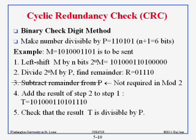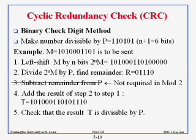CRC is mod-2 division. We select a divisor number — for example, 1110101, which is six bits — and dividing by a six-bit number gives five bits of remainder, which is your CRC. To get a 5-bit CRC you need a 6-bit number. To get a 32-bit CRC you need a 33-bit number, and Ethernet uses a 33-bit number for its CRC.